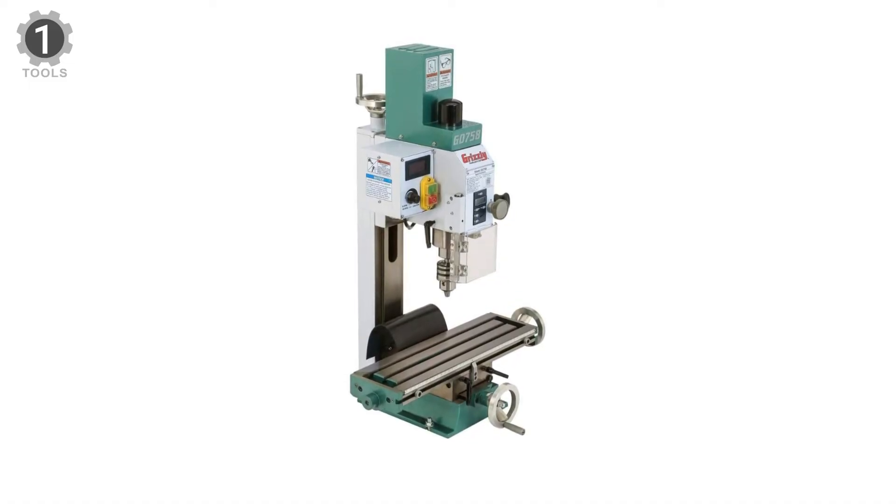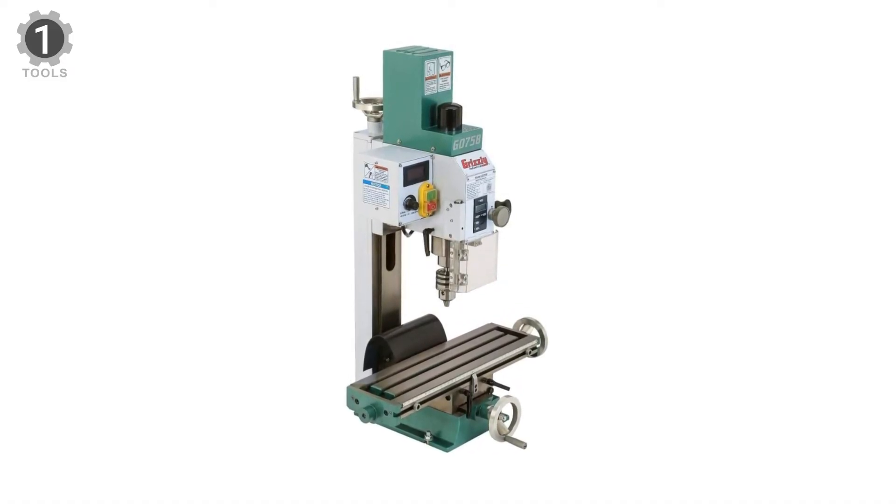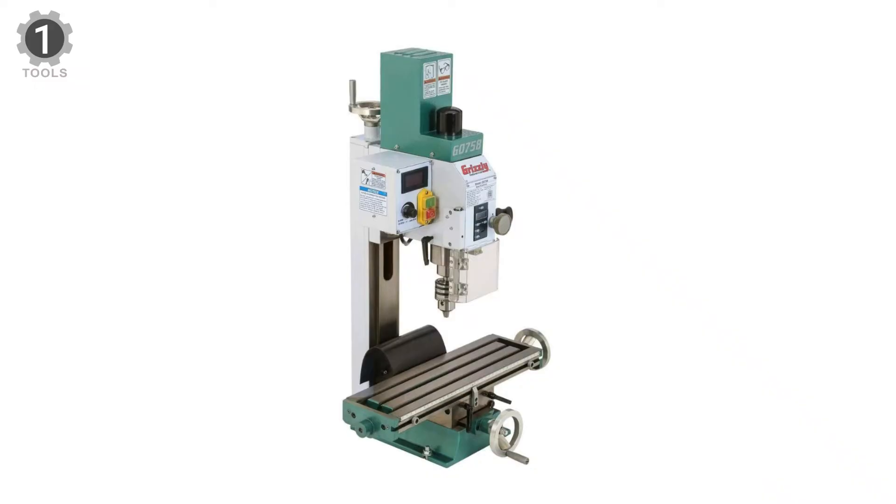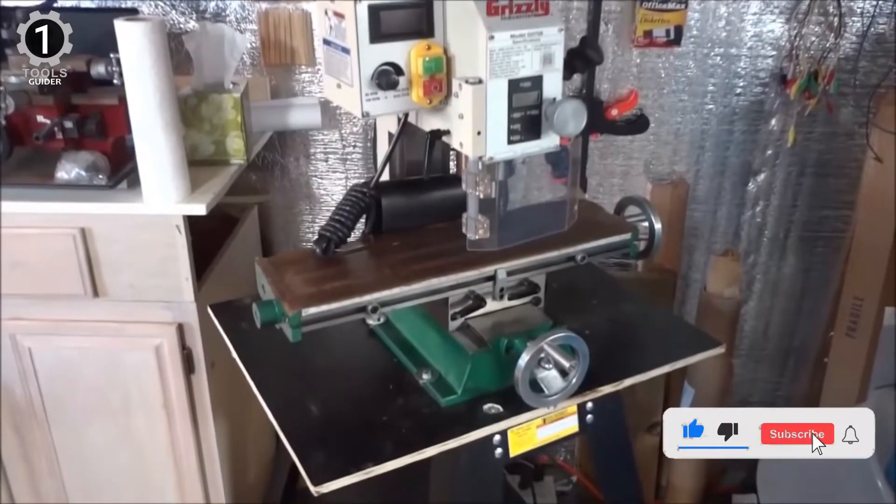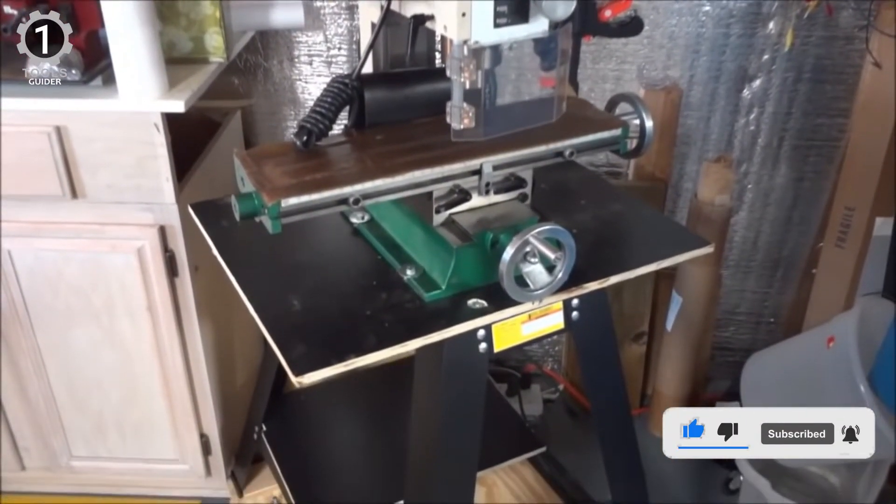The Grizzly G0758 is a friendly mini mill and well-built. It has a huge table which will be a great draw for some hobbyists where a priority is the size of the workpiece that a mill can accommodate.